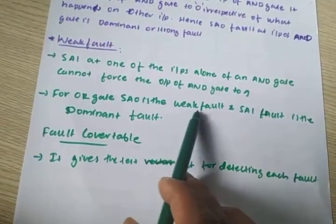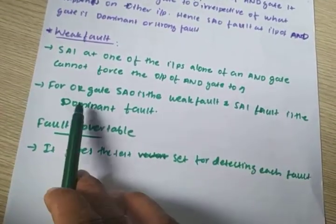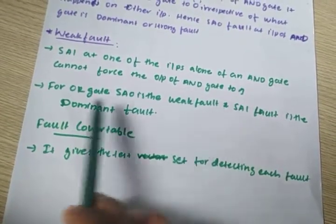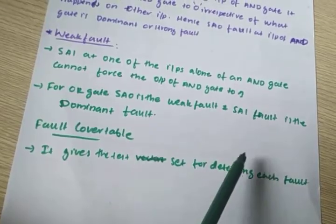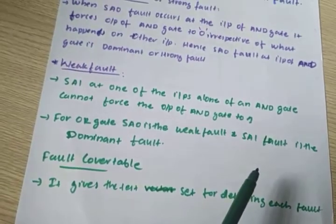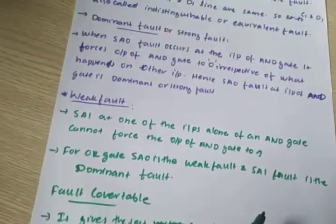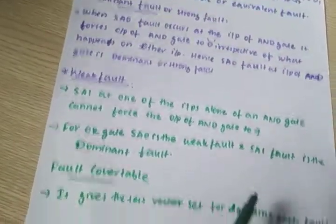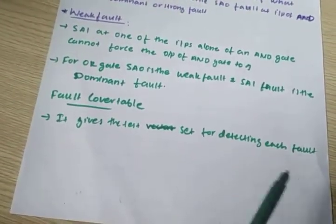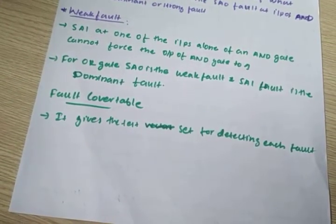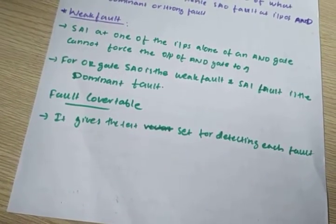For an OR gate, SA0 is the weak fault and SA1 fault is the dominant or strong fault. Next is fault cover table, which we will discuss in the next lecture.